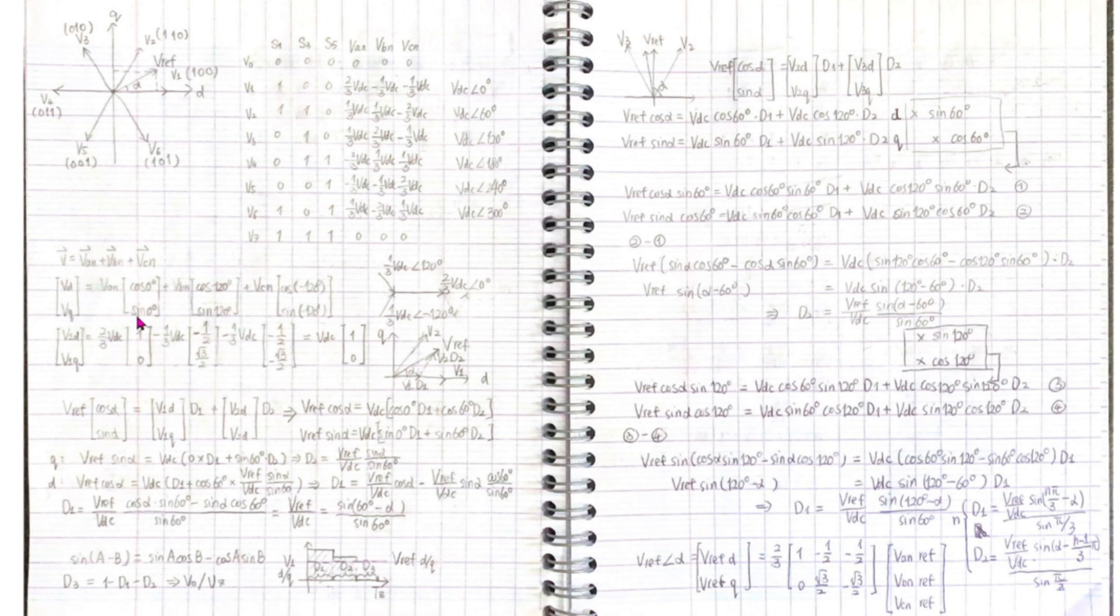For example, V can be calculated by the decomposition DQ of VAN, VBN, VCN. We can get all values from V0 to V7.